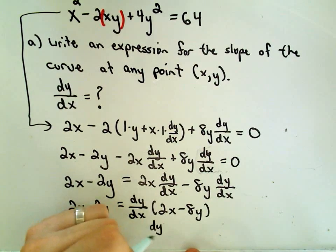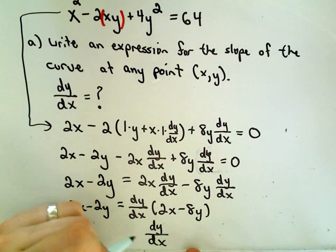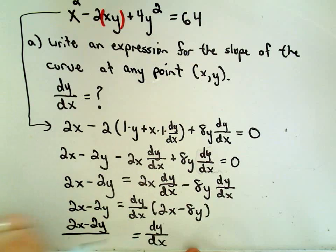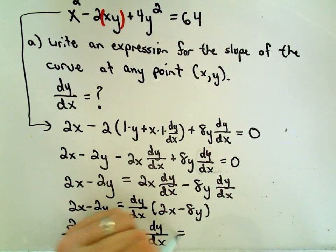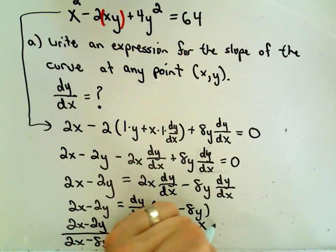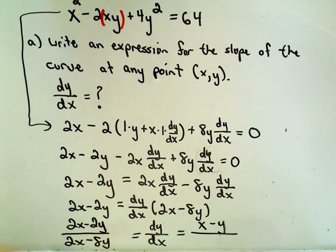So dy over dx, it says that's 2x minus 8y. And now we can simply divide both sides to get our solution here. So it says dy/dx is going to be 2x minus 2y divided by 2x minus 8y. And certainly we could factor 2 out of the numerator and the denominator, cancel it out, leave us with x minus y, and then x minus 4y.